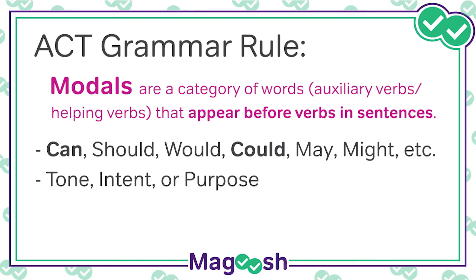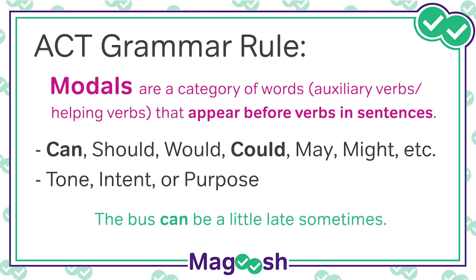Can and could are also used to express possibility, but sometimes in different ways. For example, if you've been waiting for the bus a while, someone could say: 'The bus can be a little late sometimes.' The focus here is on the bus's past tendency to be late sometimes, which provides information about the present.